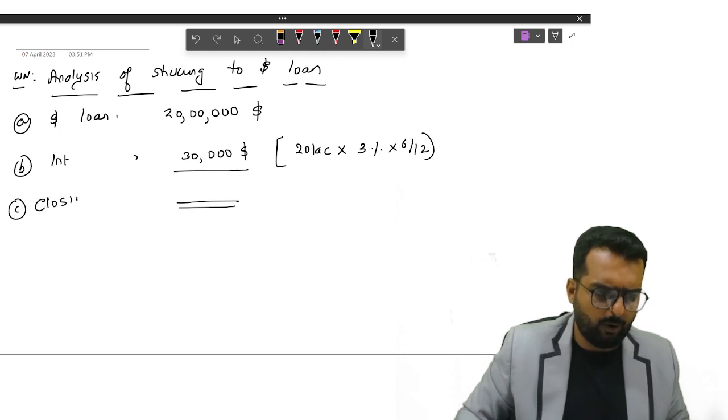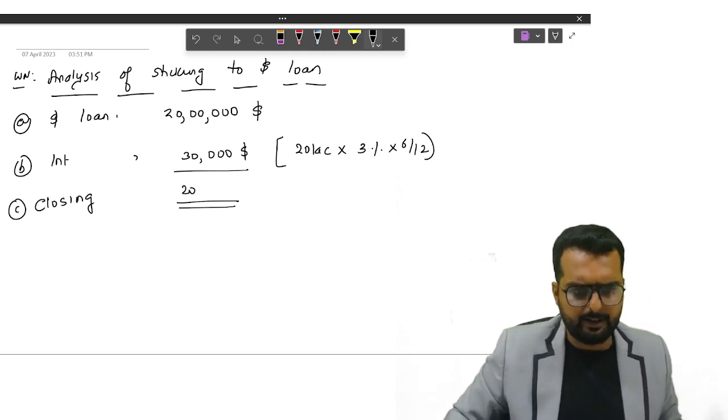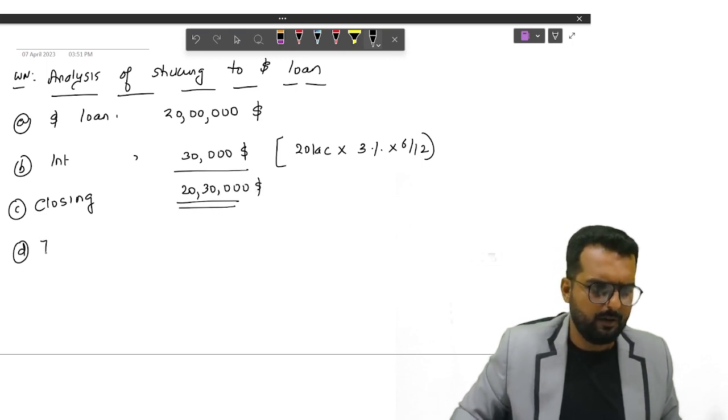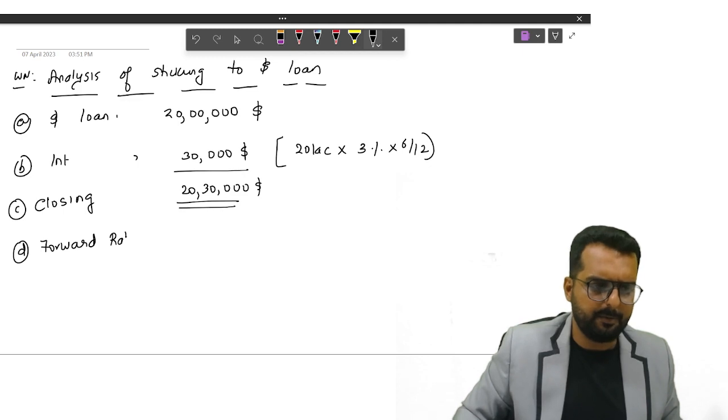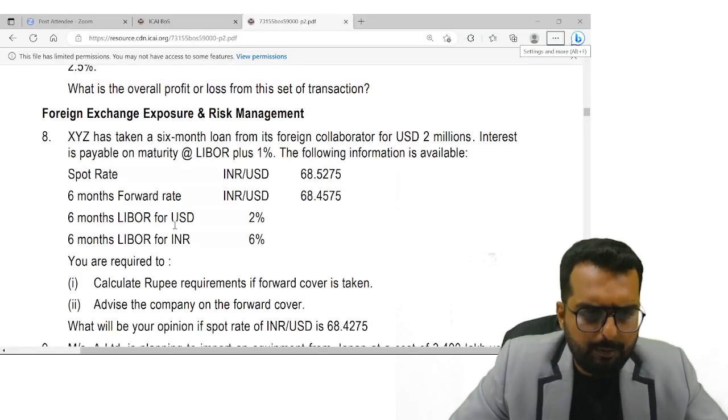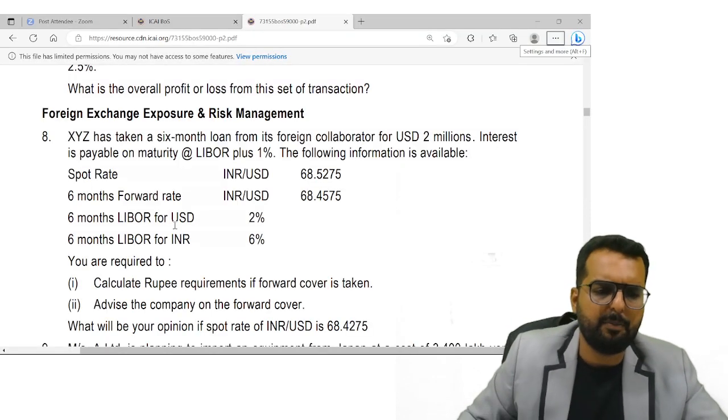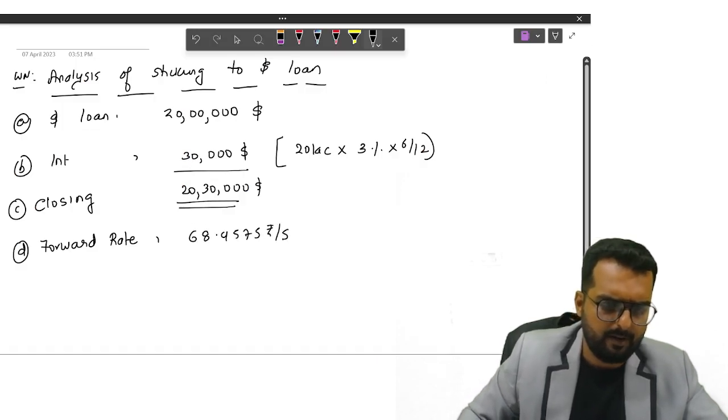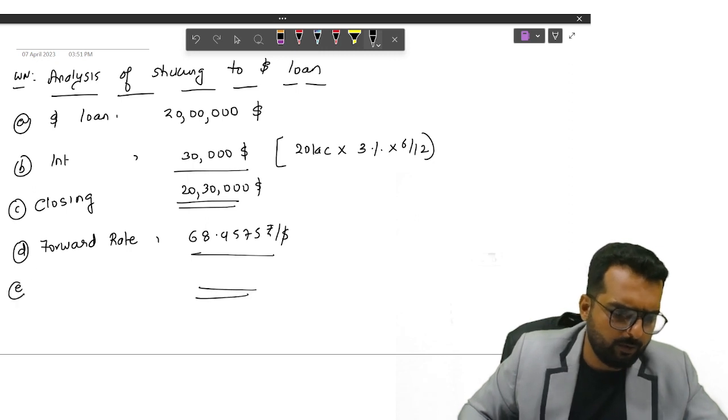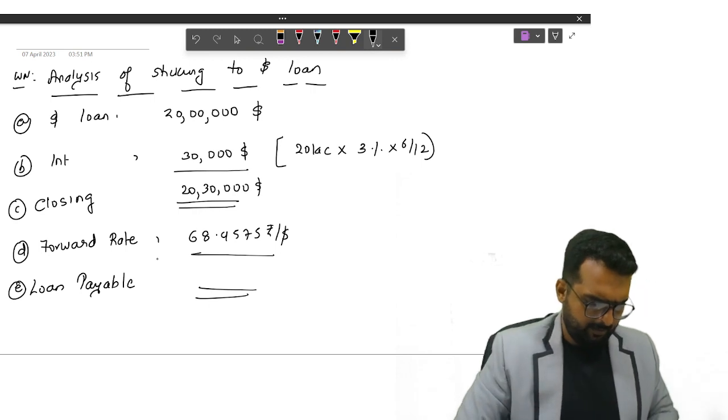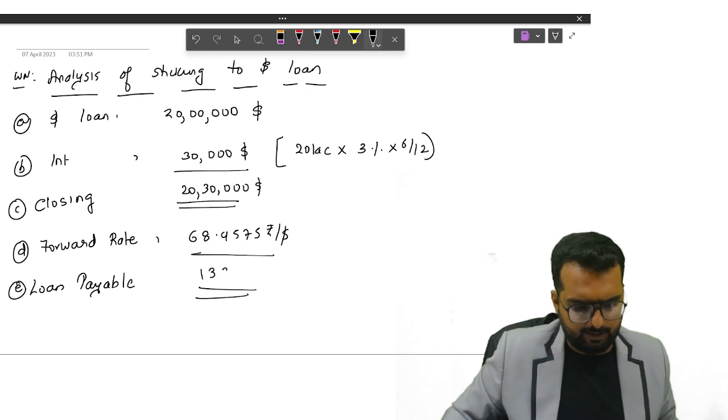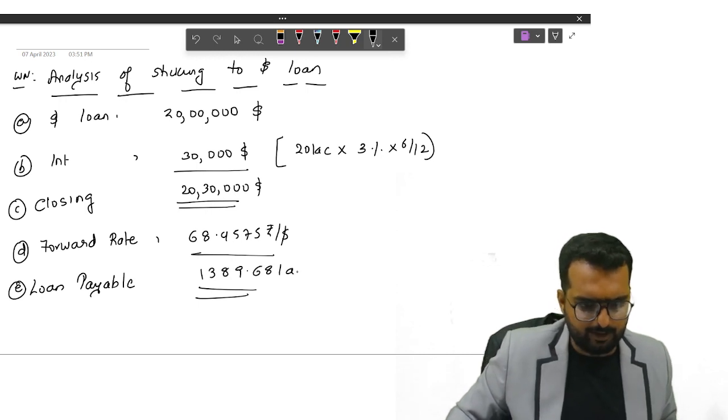Do you get the answer as $30,000? So now tell me what is your closing amount payable? 20 lakh. What is the forward rate available with me now? How much is going to be my forward rate? 68.4575. So now tell me what is going to be my loan payable? 20.30 into 68.4575. Do you get the answer as 1389.68 lakh rupees?